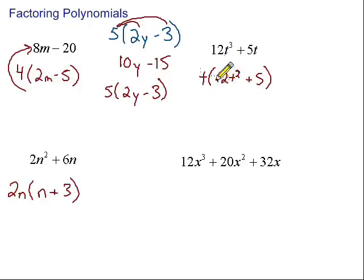Then, 5t divided by t gives us just 5. So, again, check your work. t, multiply it back through. t times 12t squared gives us 12t to the third. t times 5 gives us 5t.